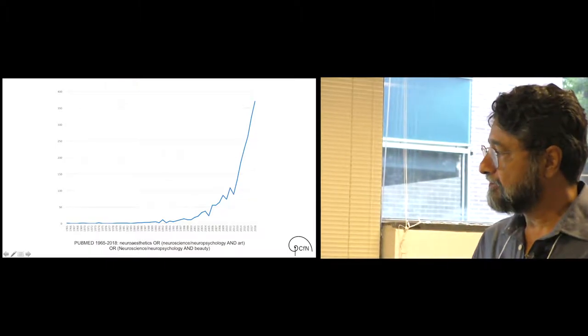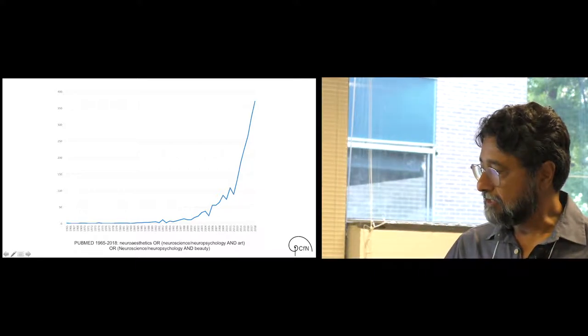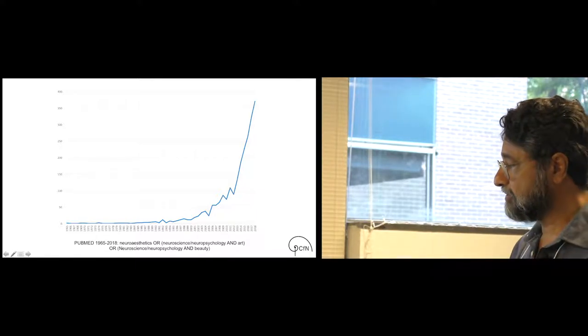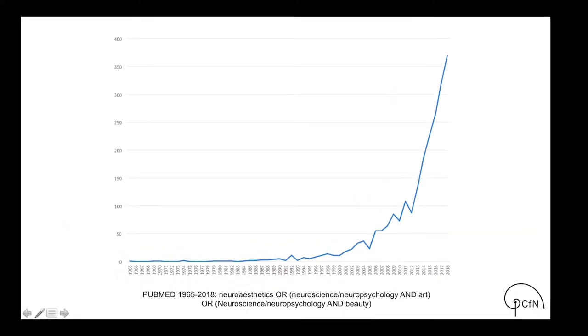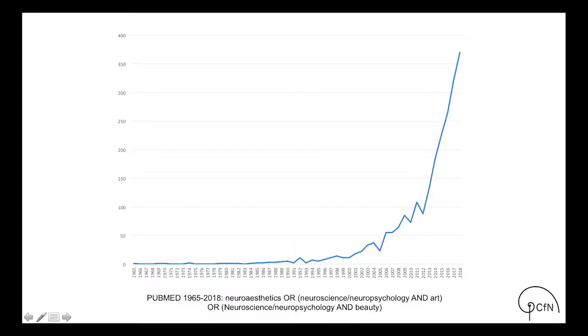To give you a sense of that, this is from a PubMed search using these search terms: neuroaesthetics, neuroscience or neuropsychology and art, neuroscience or neuropsychology of beauty. You can kind of see what an early stage of evolution this field is in. It's really in the last 10 or 12 years that there's been a rise, and we don't know where it's going to go. Very young field. What this means in practice is almost always when I give talks, people will ask a question, often a very good question, and the answer is we don't know because nobody's done it. This is a great field to go into because the big questions haven't been addressed. There are some low-hanging fruit, big questions to be asked.